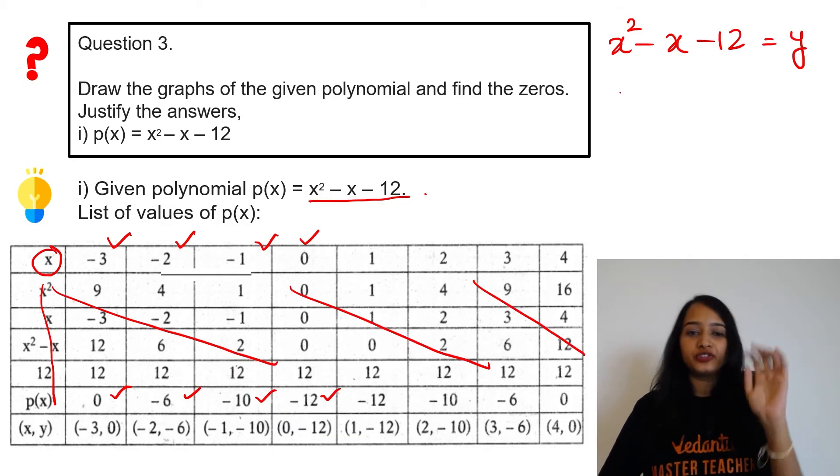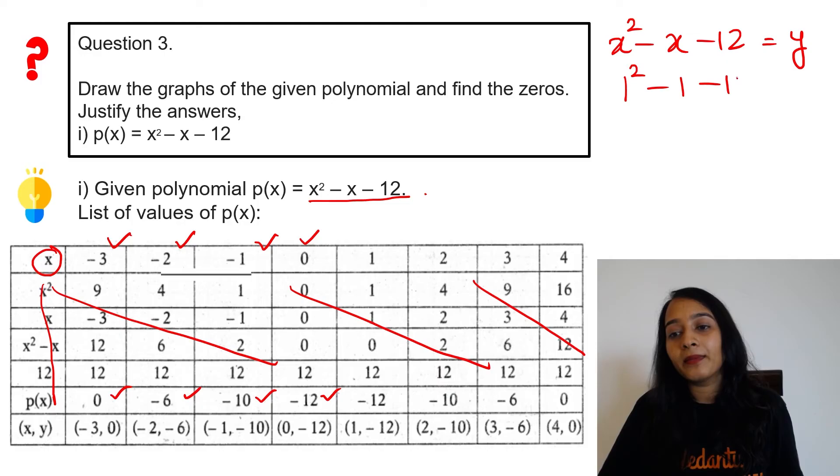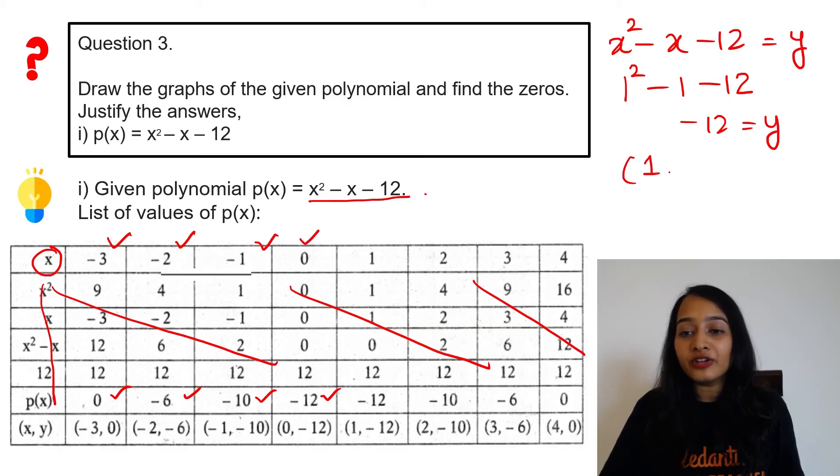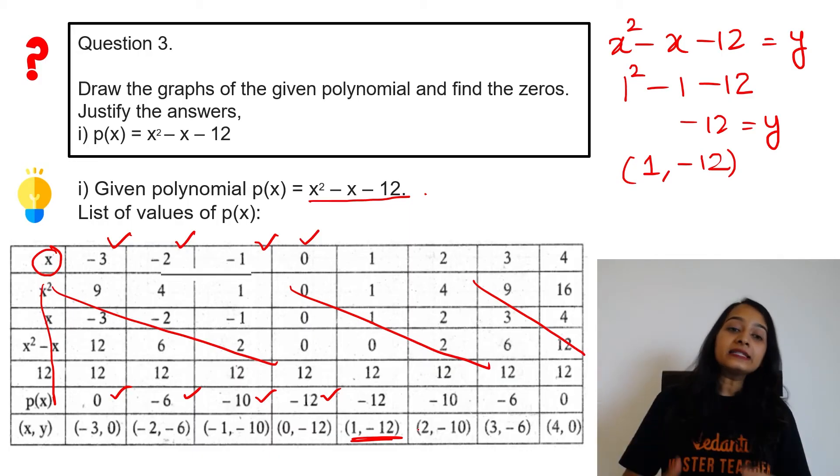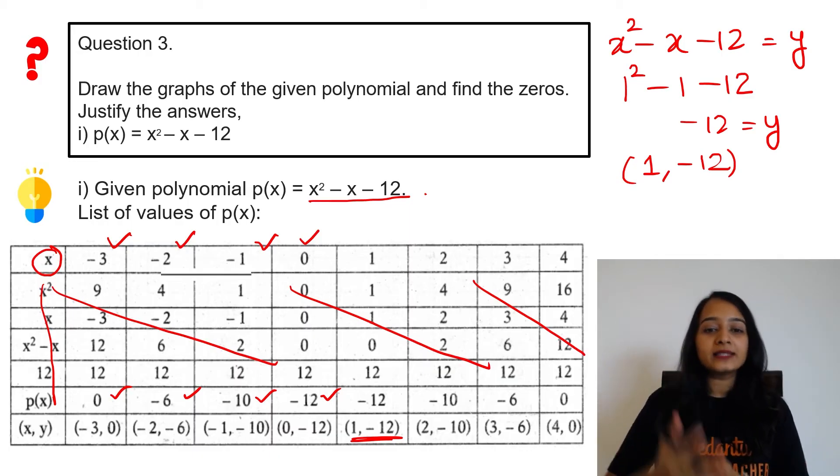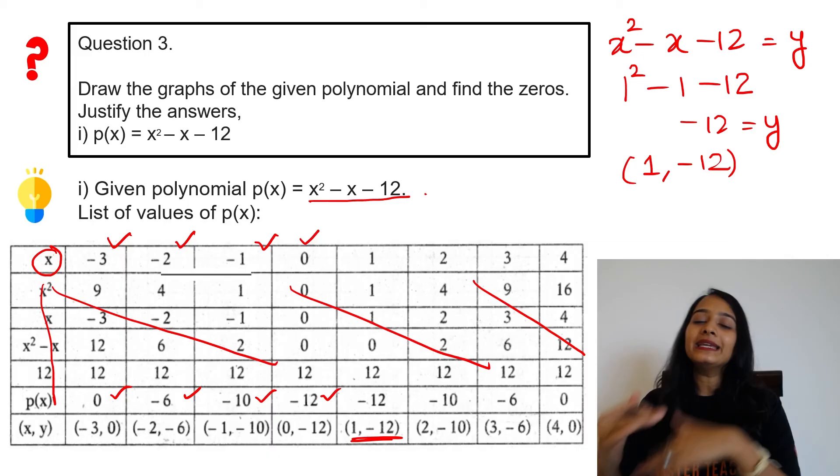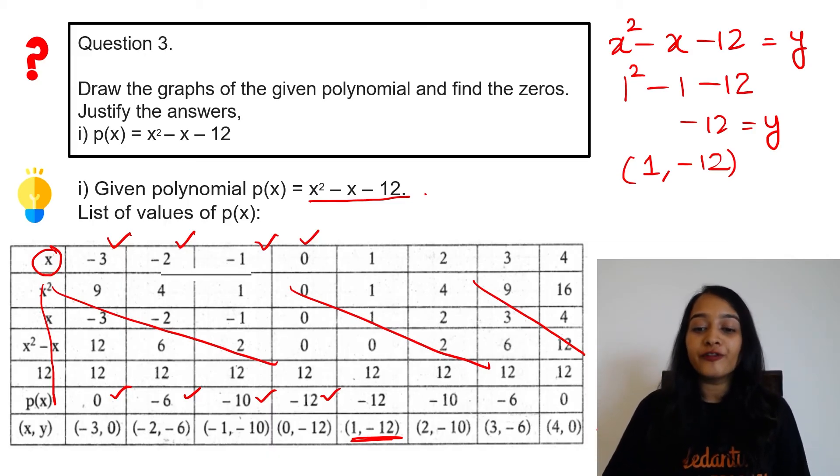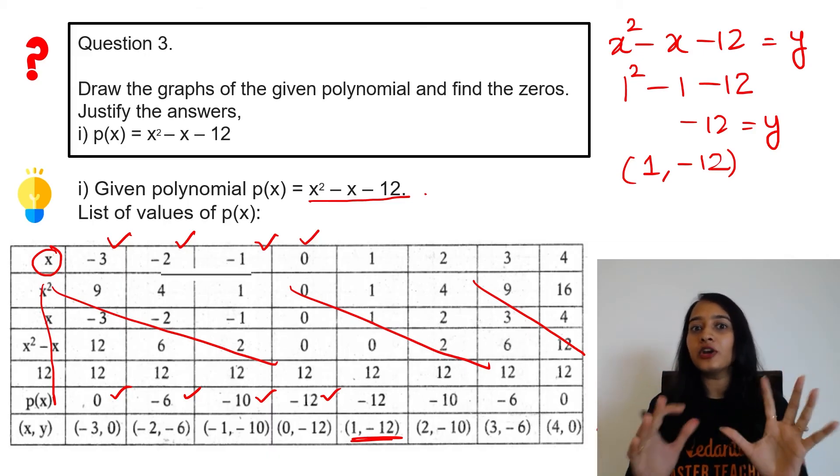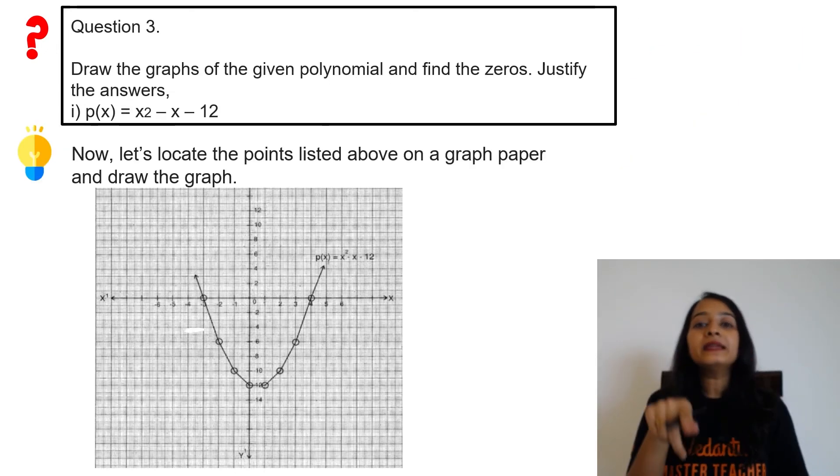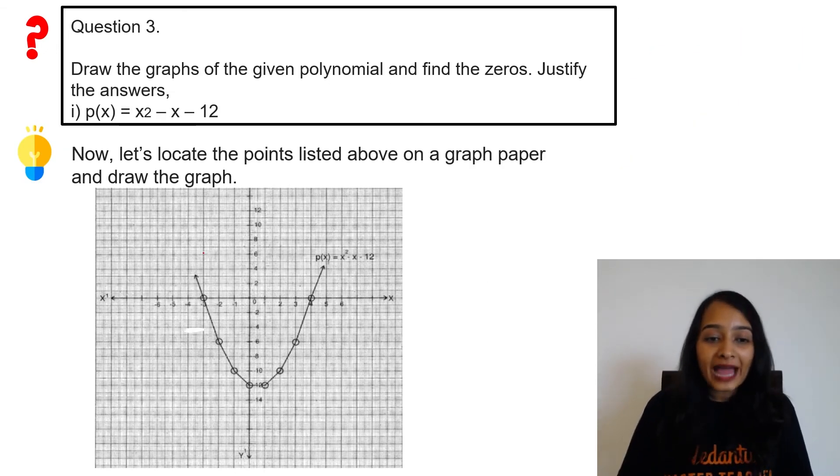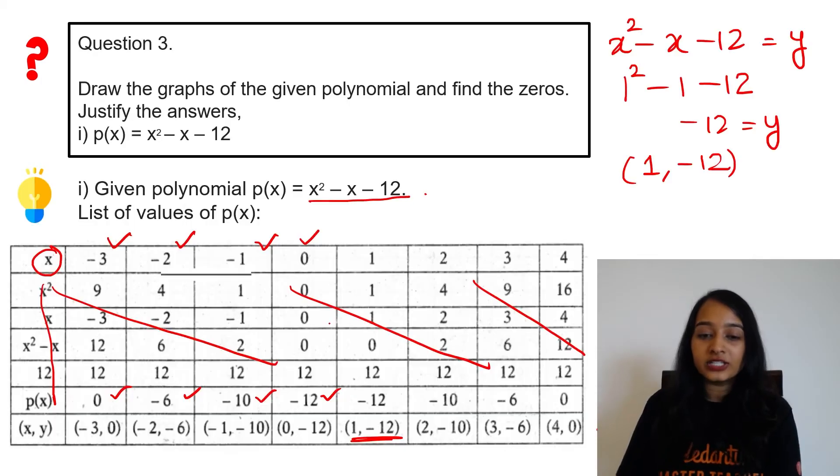When you substitute different values of x for this polynomial, you get different values of y. For example, x = 1: 1² - 1 - 12 = 1 - 1 - 12 = -12, so y = -12, giving the point (1, -12). Similarly for x = -3, -2, -1, 0, 1, 2, 3, substitute and you will get a set of points. With 5 or 6 points, it becomes easy to draw the graph.